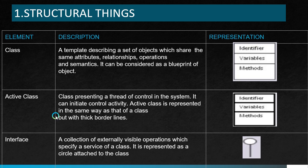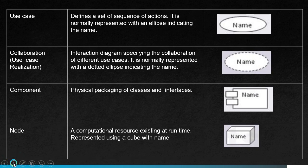The next element is active class — a class presenting a thread of control in a system that can initiate control activity. It is represented the same way as a class but with thick border lines. The next element is interface — a collection of externally visible operations which specify a service of the class. It is represented as a circle attached to the class.